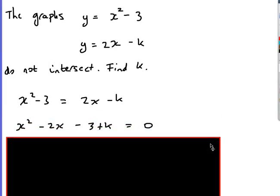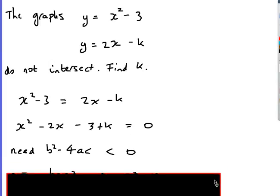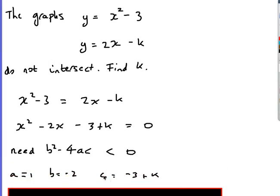So if it has no solutions, well, first off anyway, make it equal to quadratic. If it's got no solutions, I need b squared minus 4ac less than 0. This is the case with no solutions. As before, a is 1, b is negative 2, c is negative 3 plus k. It's actually the same as before.